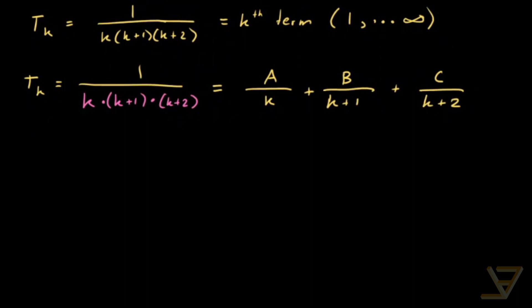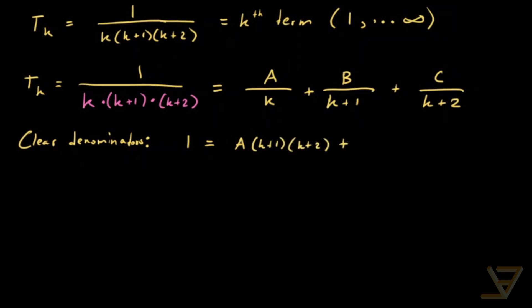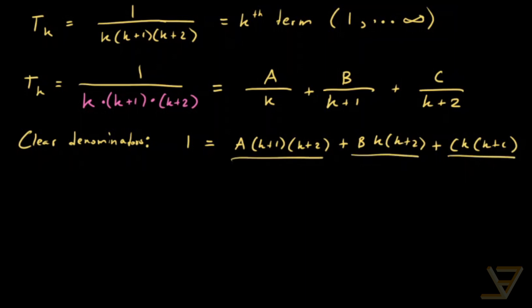What we'll do is clear the denominators. That gives us 1 equals A(k+1)(k+2) plus B·k(k+2) plus C·k(k+1). What I want you to notice is that we can make pairwise terms disappear by substituting k = 0, k = -1, and k = -2.